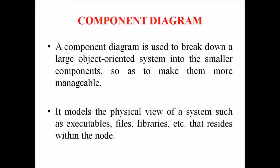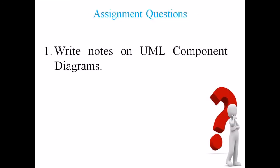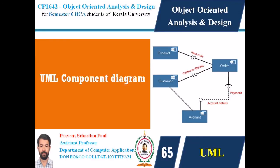In this lecture, we have discussed the component diagram. A component diagram is a structural diagram which is used to break down a large object-oriented system into smaller components so as to make them more manageable. Hope you understood this topic. Kindly go through this assignment question: write notes on UML component diagrams. In the upcoming lecture, we will discuss an example relating to this component diagram. See you soon. Until then, goodbye. Thank you and all the best.